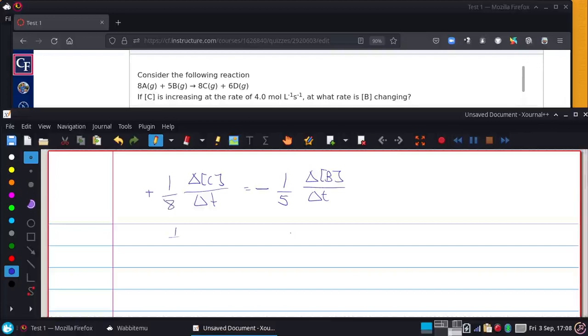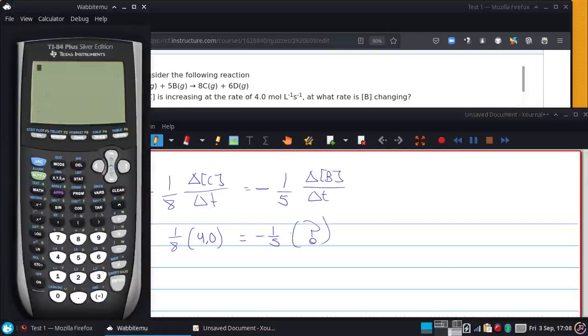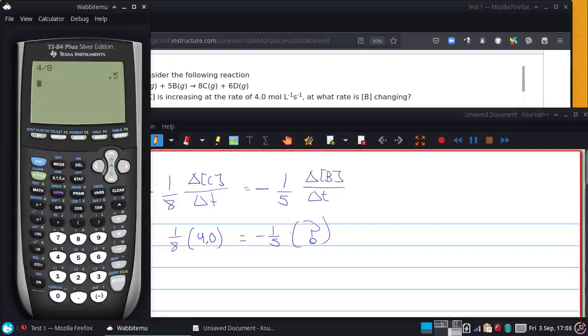If C has a 4 here, we can solve for that, because 4 divided by 8, multiply this times 5.